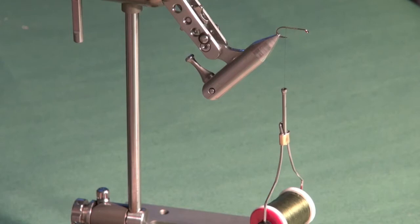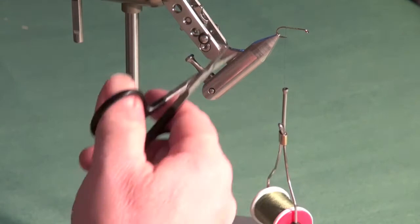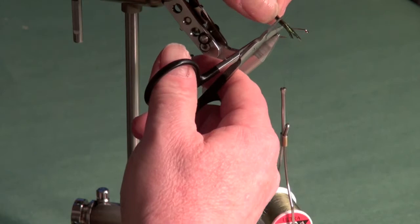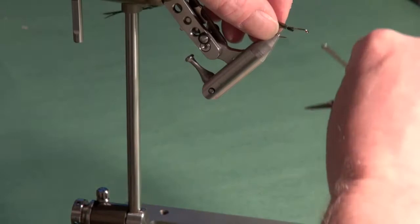I've got a hook in the vise and I've just put some tying thread on for demonstration purposes. I'm going to take, in this case, five to six strands of peacock herl, trim away the brittle tips, and then tie in the trimmed off tips onto the shank.